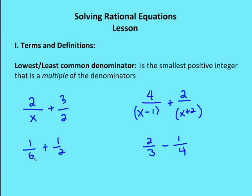Let's take a couple of easy examples. Looking at 1 over 6 plus 1 over 2, I want to find the smallest positive integer that is a multiple of the denominators. 6 is a multiple of itself — 6 times 1 is 6. And 2 times 3 gives me 6. So the smallest positive integer that is a multiple of the denominators is going to be 6.